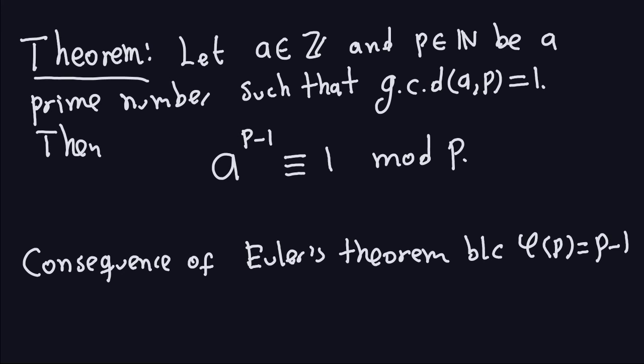Those are the theorems that are important in number theory, and we discussed them because they are important for what we're going to do later in public key cryptography or asymmetric cryptography. In the next video, we will see how to use all the number theory we just learned and how it's going to be applied to a particular public key cryptography algorithm, where all these theorems will play a big role.